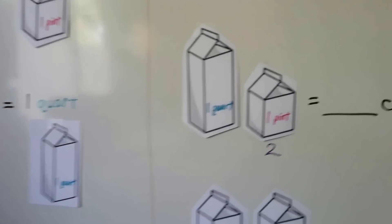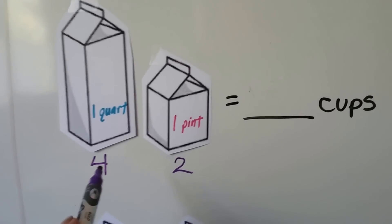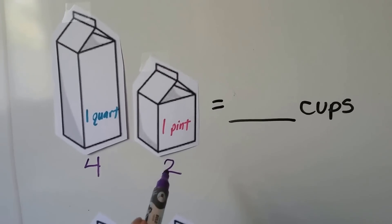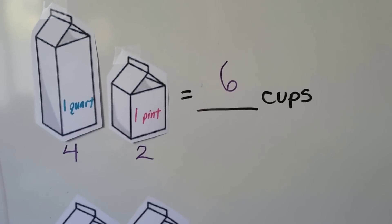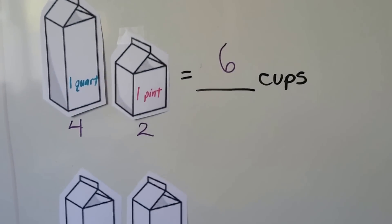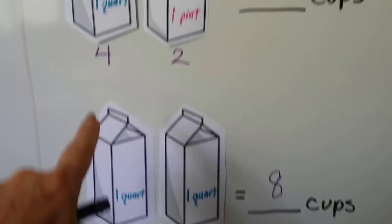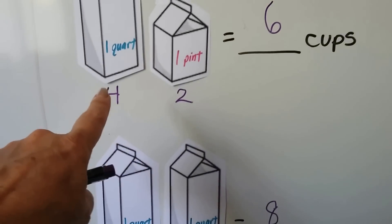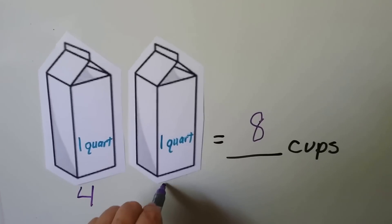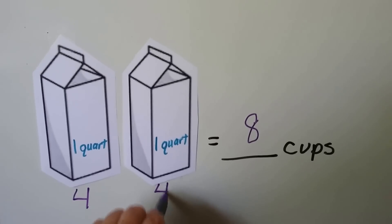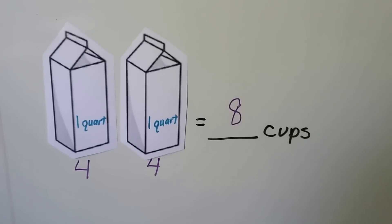So a quart is four cups. We add the four cups plus the two cups, we get six cups. One quart and one pint is the same thing as six cups. If this is four cups, that means four cups and four cups and four cups is eight cups.